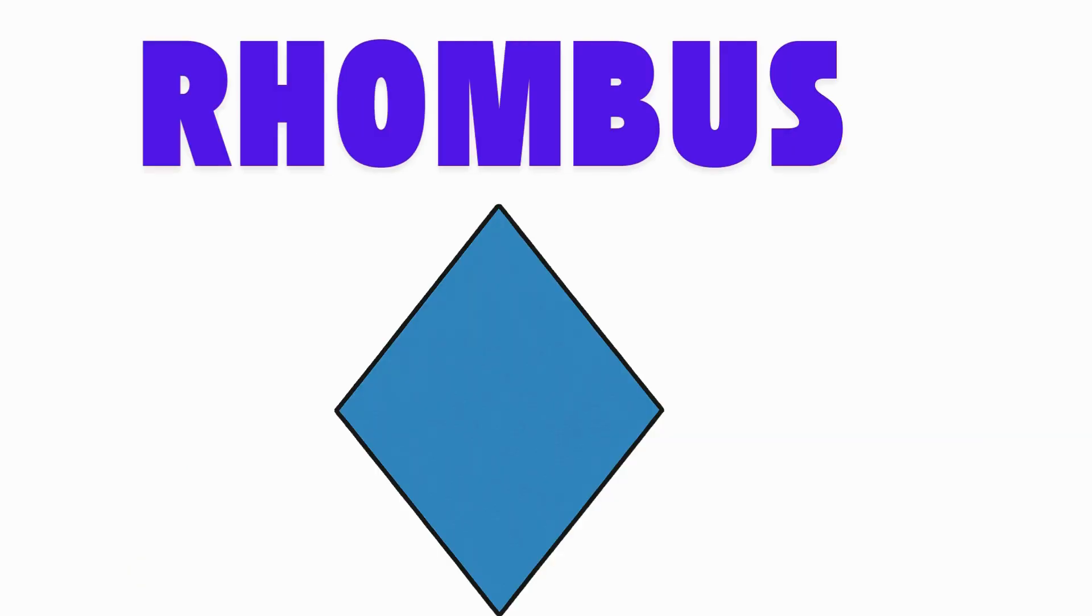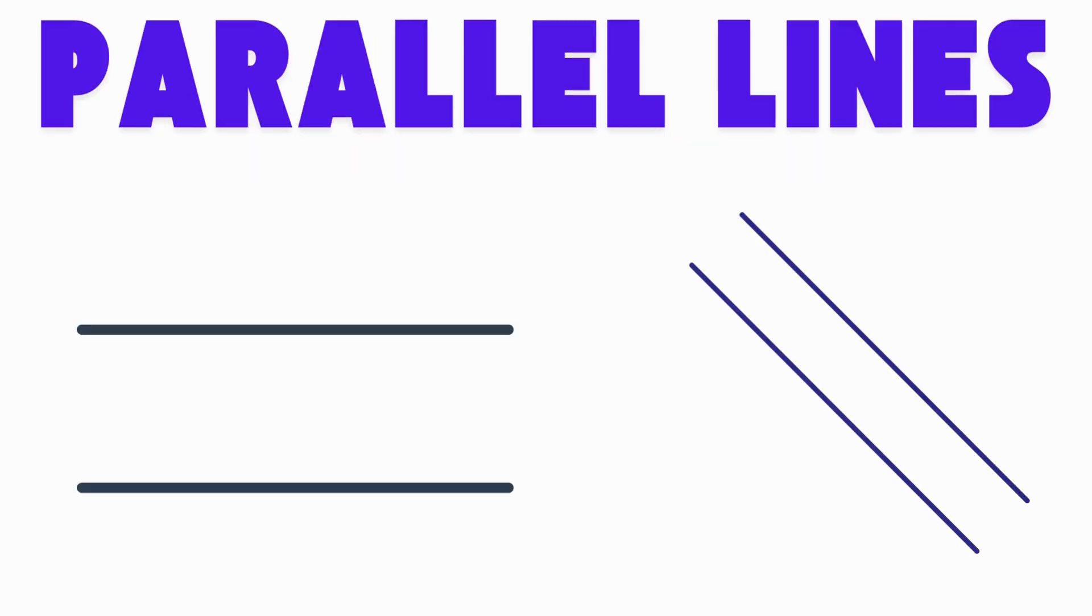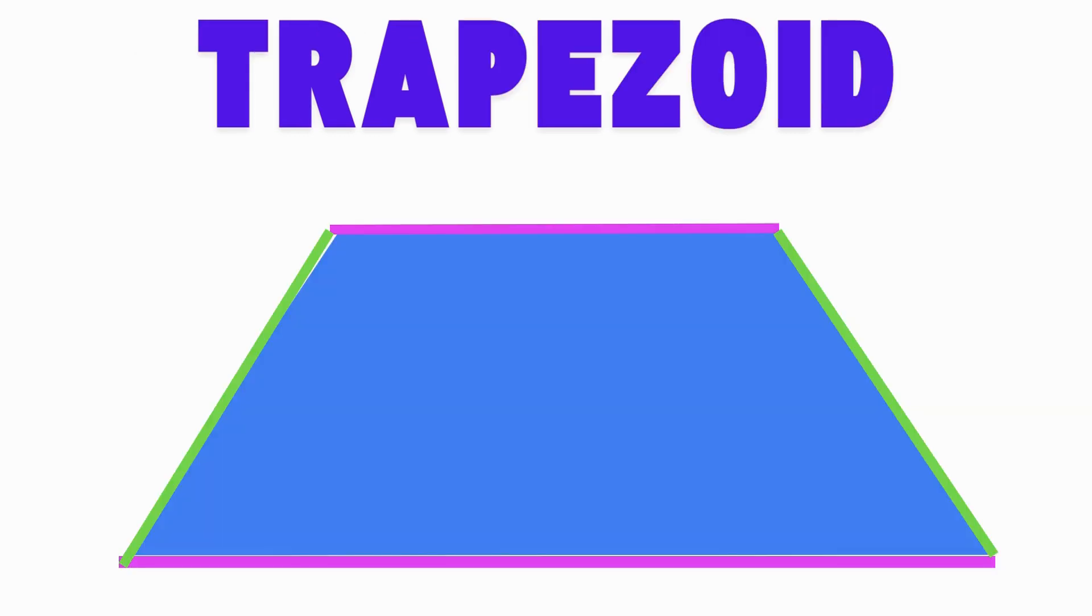A shape with four equal sides that looks like a diamond is a rhombus. Parallel lines are lines that stay the same distance apart, go in the same direction, and never touch. A trapezoid is a shape with one pair of parallel sides.